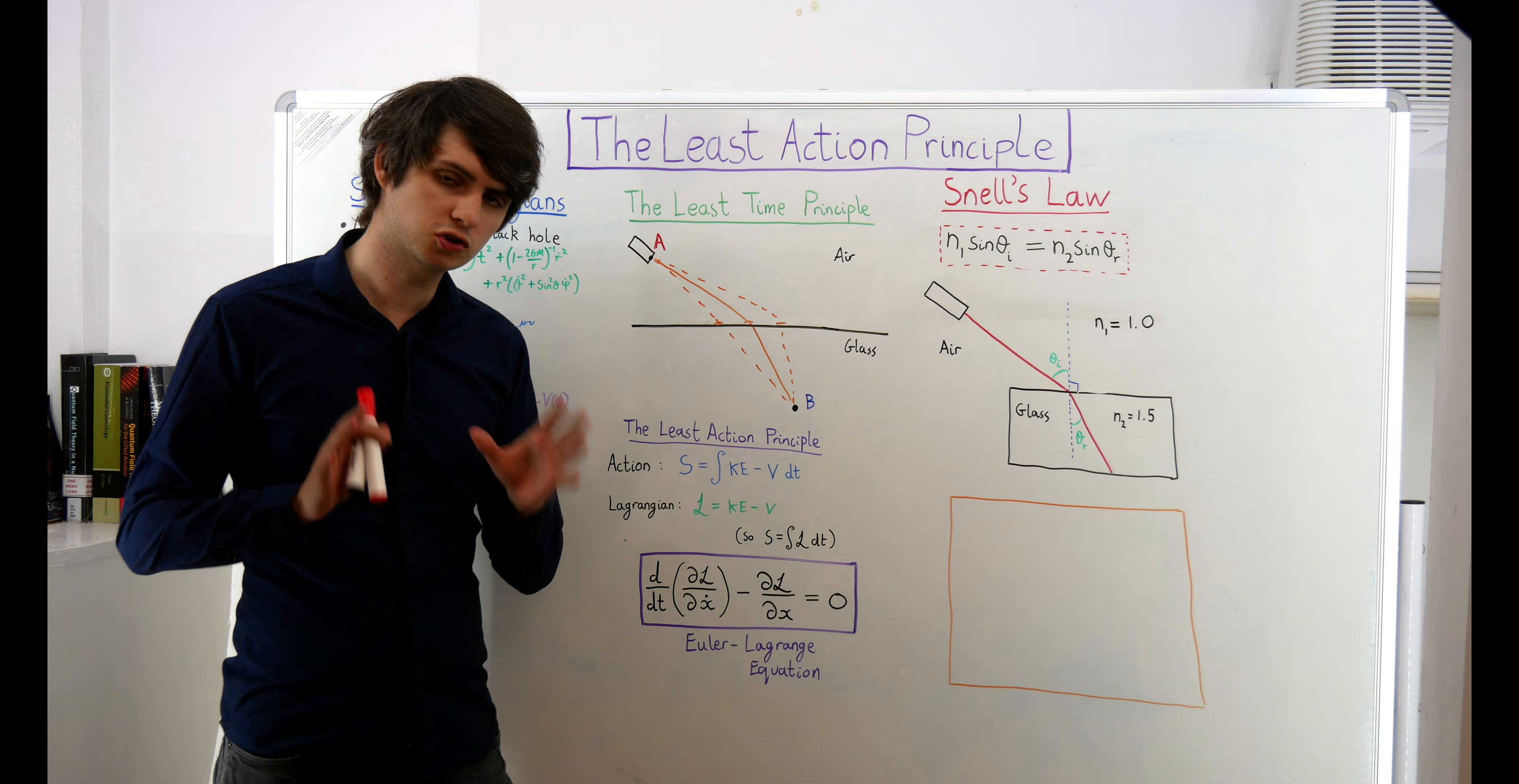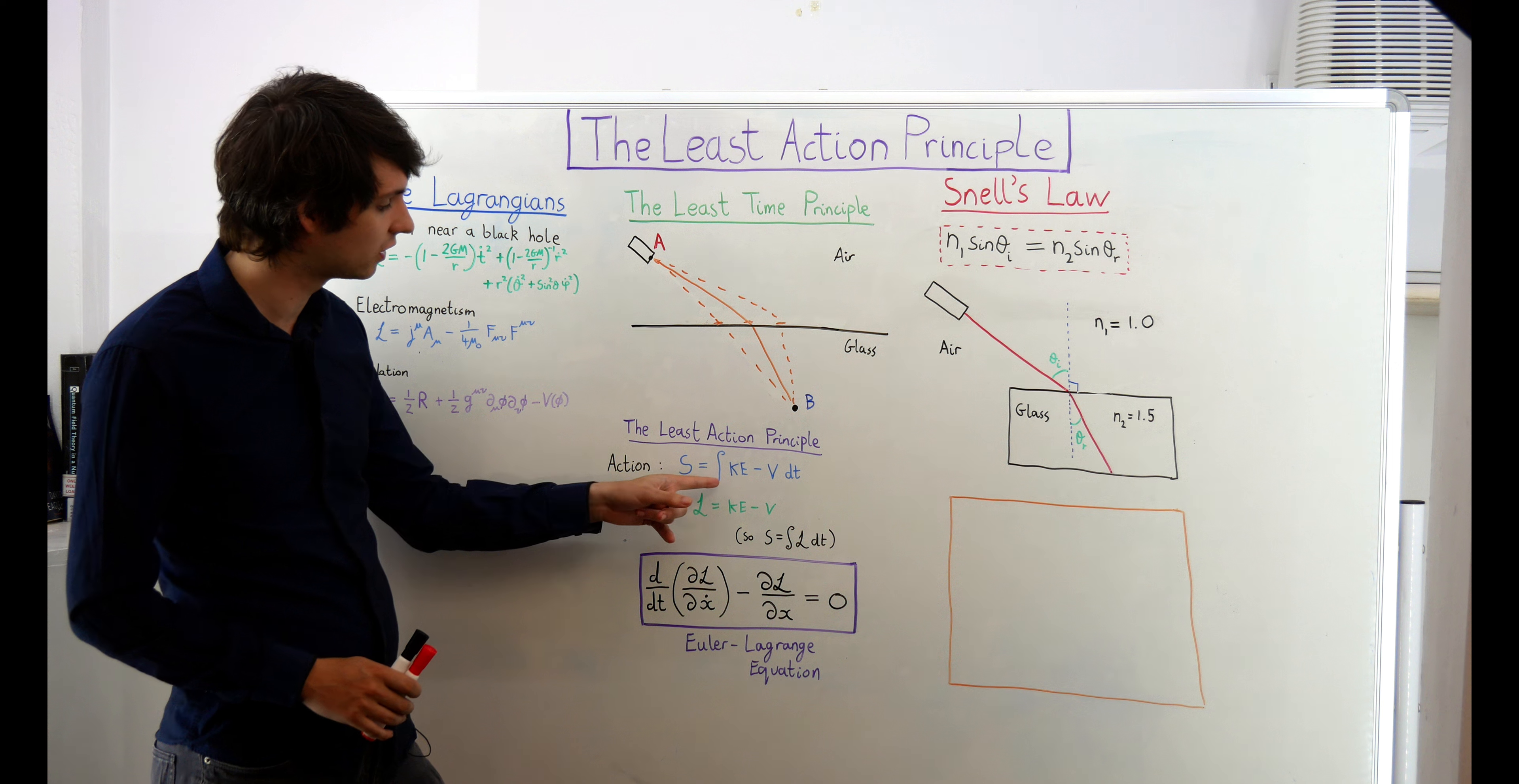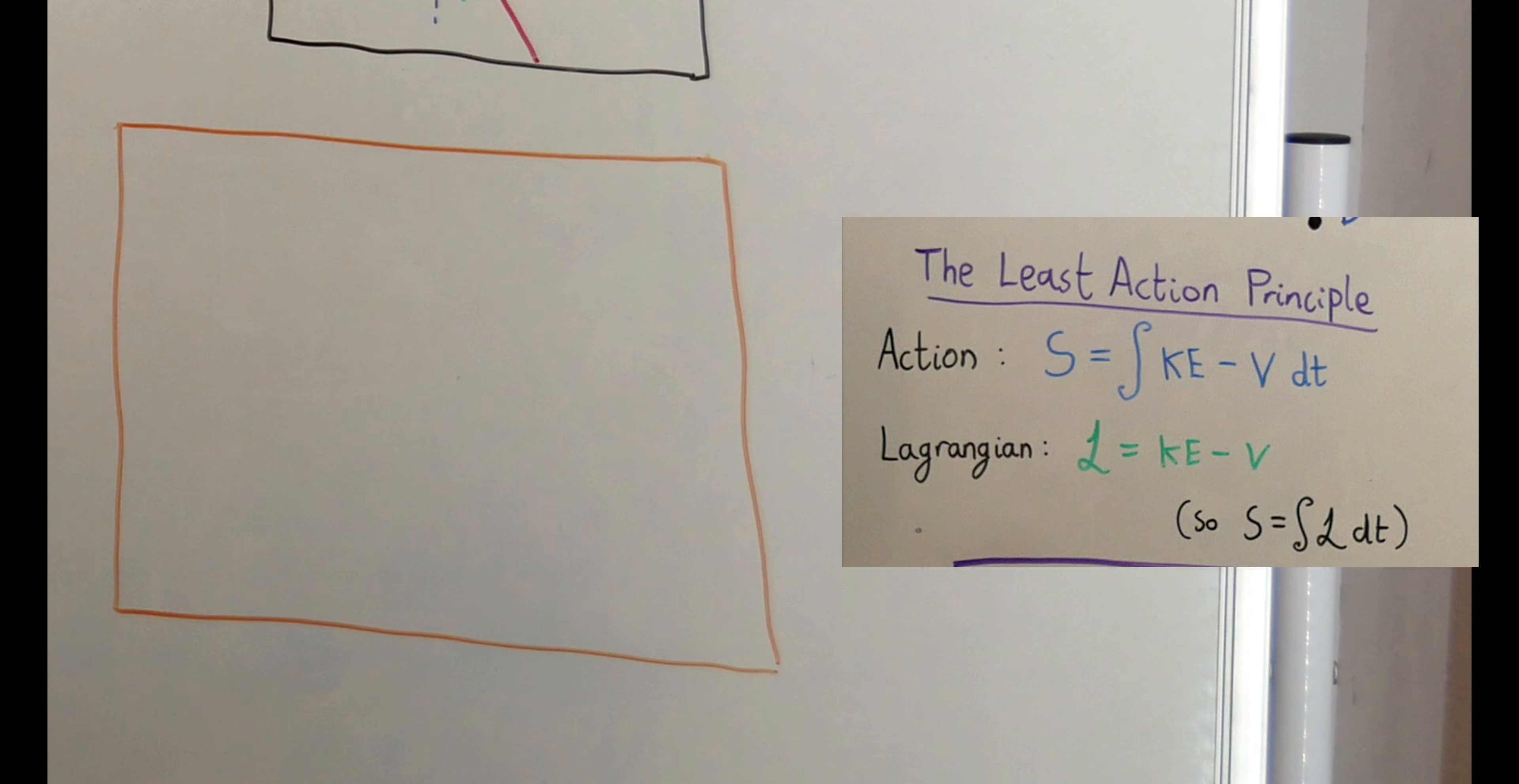But what is action? Action is a bit of a strange quantity. It's not something you will have encountered in Newtonian physics. It has units of energy times time, and is given here by the integral of the kinetic energy minus the potential energy with respect to time. To get a better grasp of what action is, let's consider a specific system.